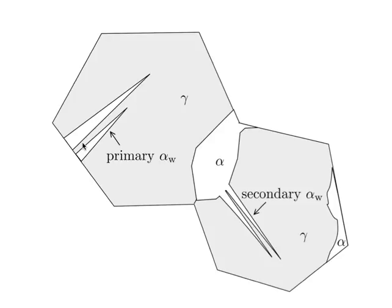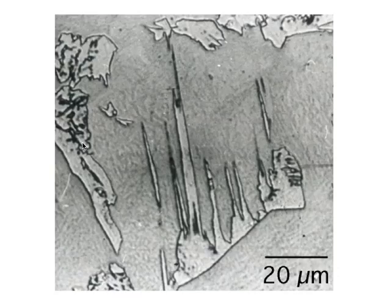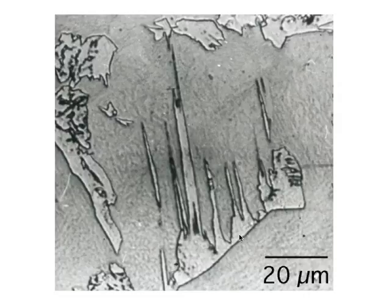Whatever morphology we observe, we need to explain it in terms of atomic mechanisms. This is an optical micrograph of what Widmanstätten ferrite looks like — you can see the thin wedge shapes, growing from ferrite at the austenite grain boundaries. Another thing to notice is that these plates are coarse. The scale at the bottom is 20 micrometres; remember with bainite we were talking about a quarter of a micrometre.